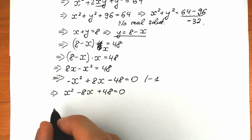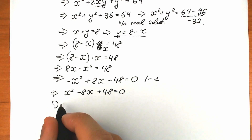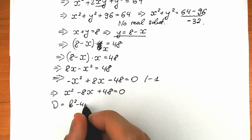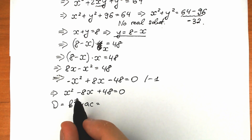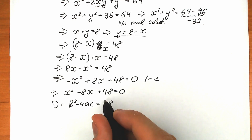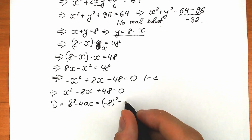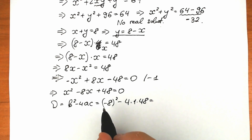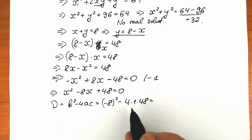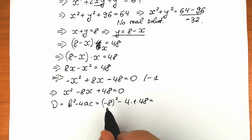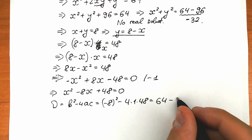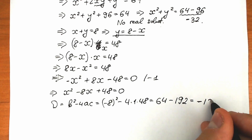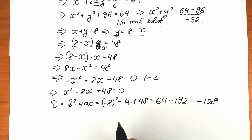Let's find the discriminant. The discriminant equals b squared minus 4ac, the well-known formula. Plugging in: (negative 8) squared minus 4 times 1 times 48 equals 64 minus 192, which gives us negative 128. This confirms we have a complex root.